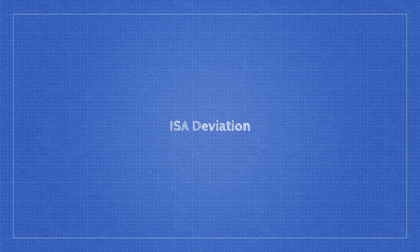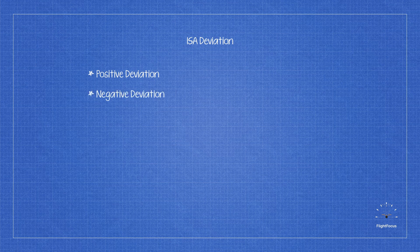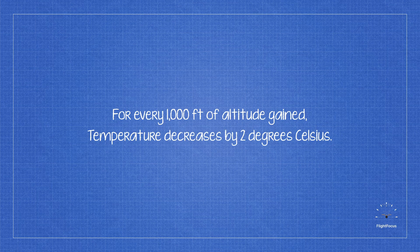ISA deviation is the difference between the ISA temperature and the actual temperature. It can be a positive or a negative deviation. We also use the Jet Standard Atmosphere, JSA, which assumes that temperature lapses at 2 degrees Celsius per 1,000 feet to infinity.